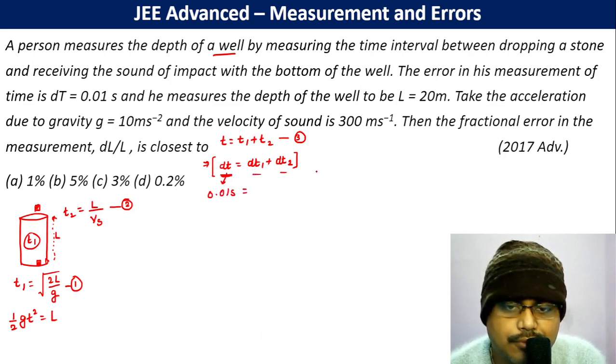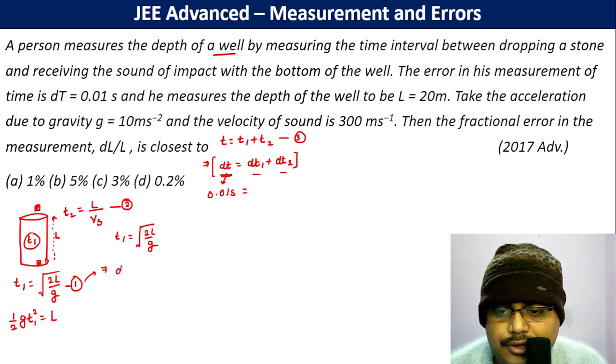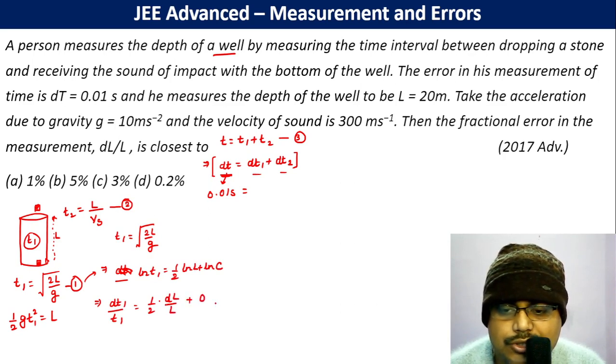These two we have to find out. Now if we take this, t1 is equal to sqrt(2L/g). Therefore, for dt1, let us take ln on both sides. ln(t1) = (1/2)ln(L) plus ln(some constant). Differentiate, so dt1/t1 = (1/2)(dL/L) plus differentiation is zero. Therefore, dt1 becomes (1/2)(dL/L)t1.